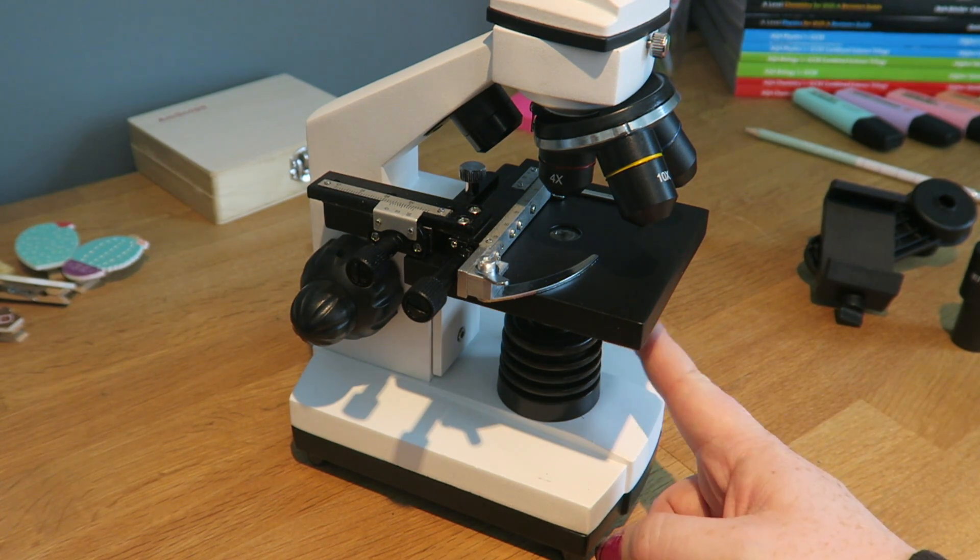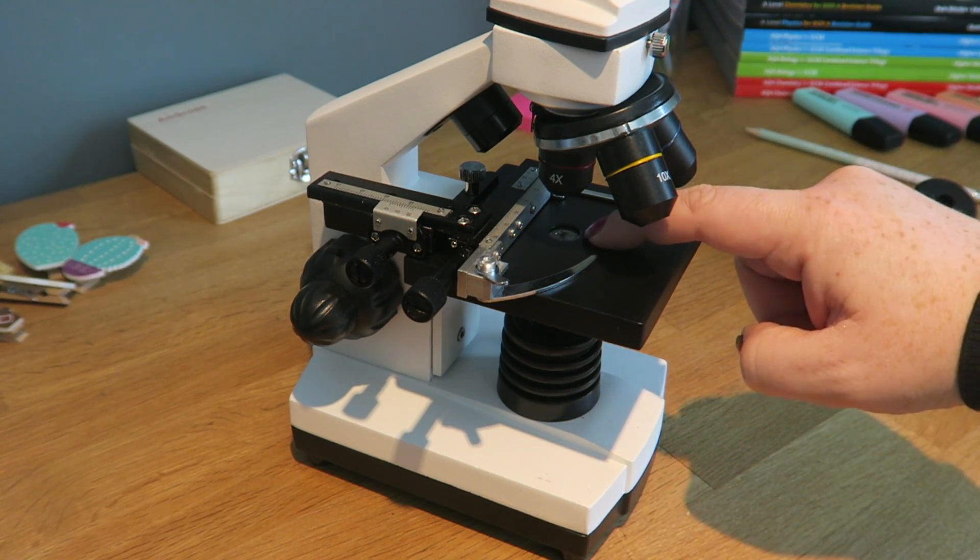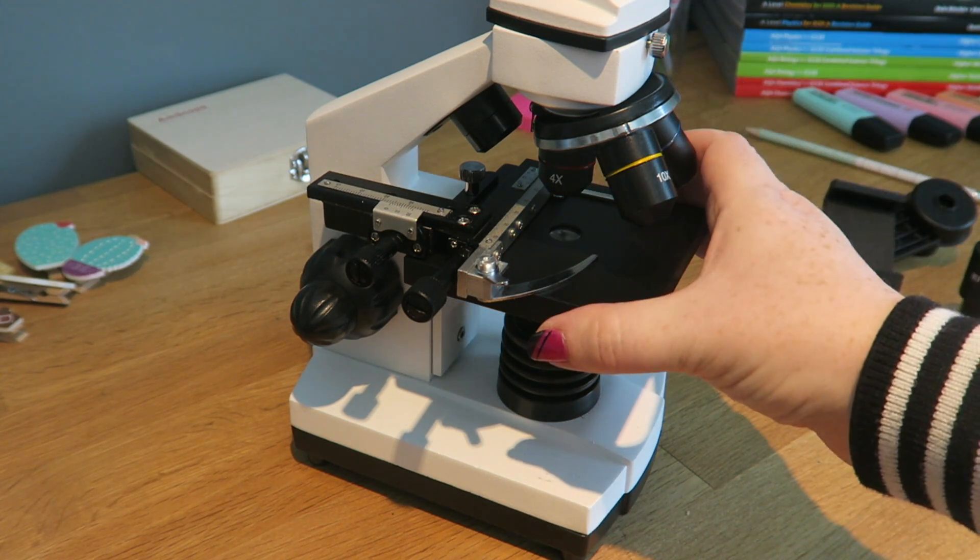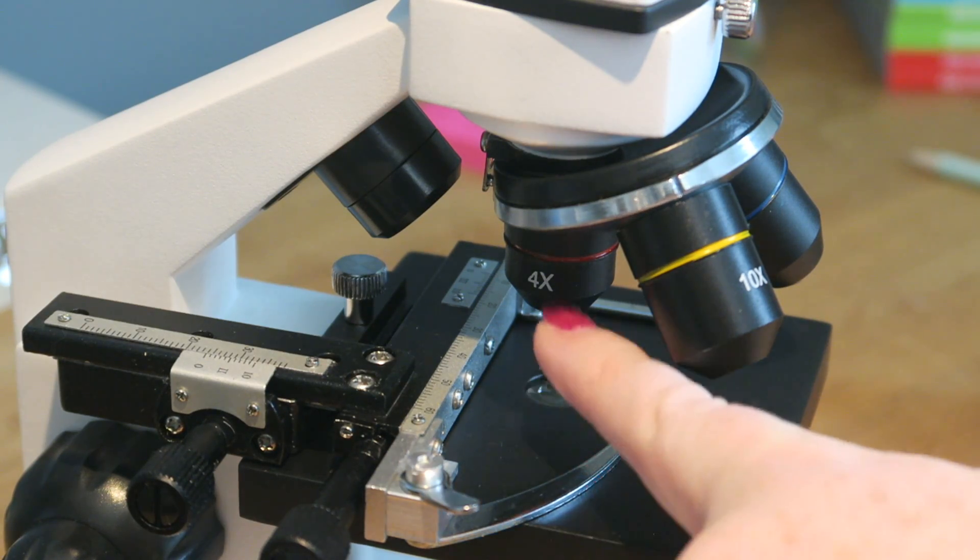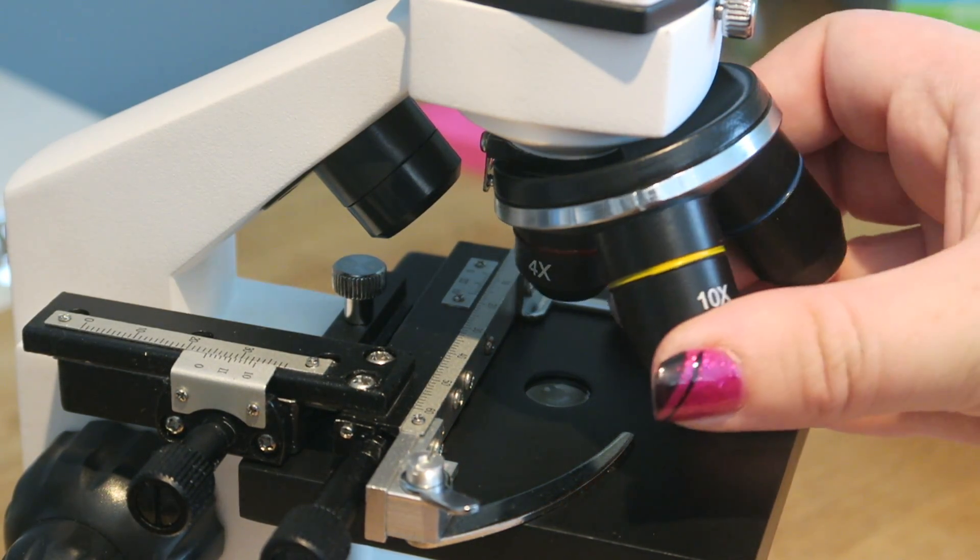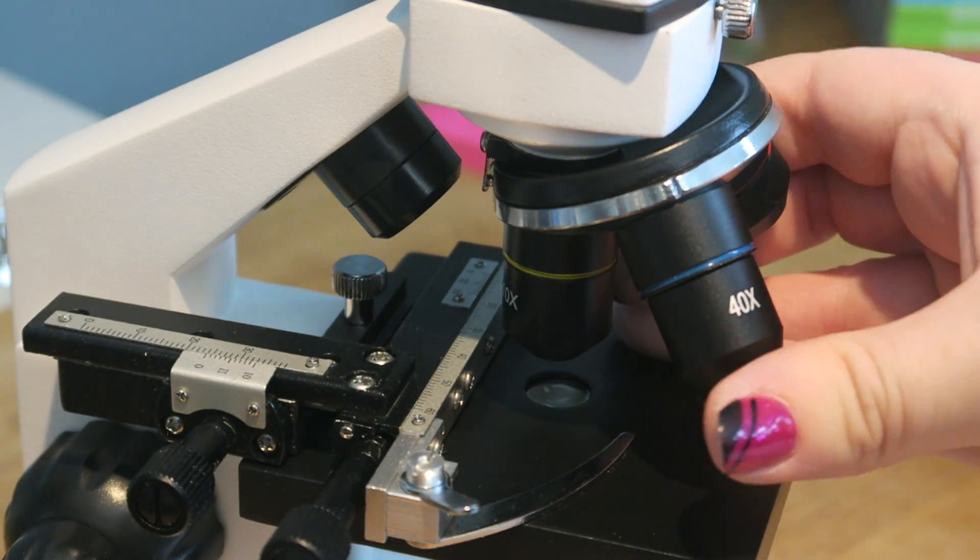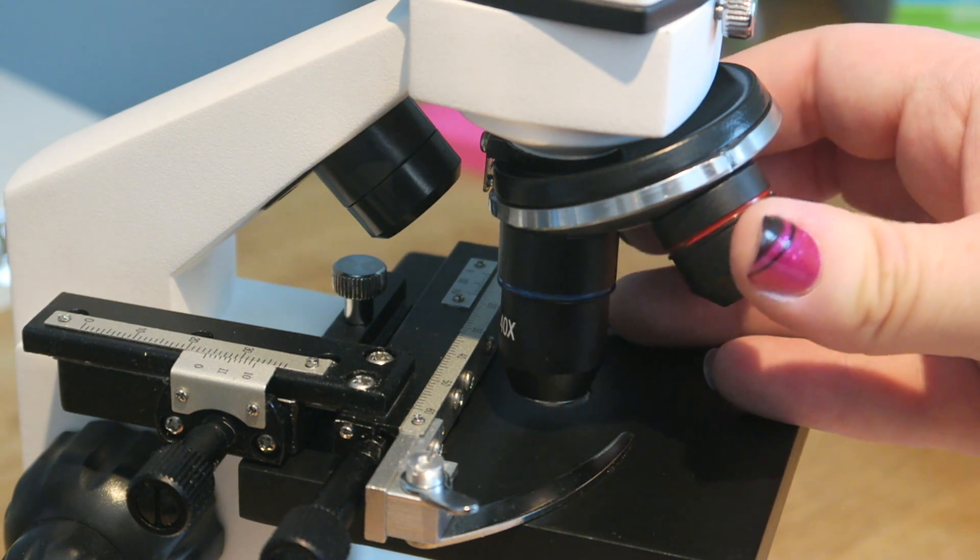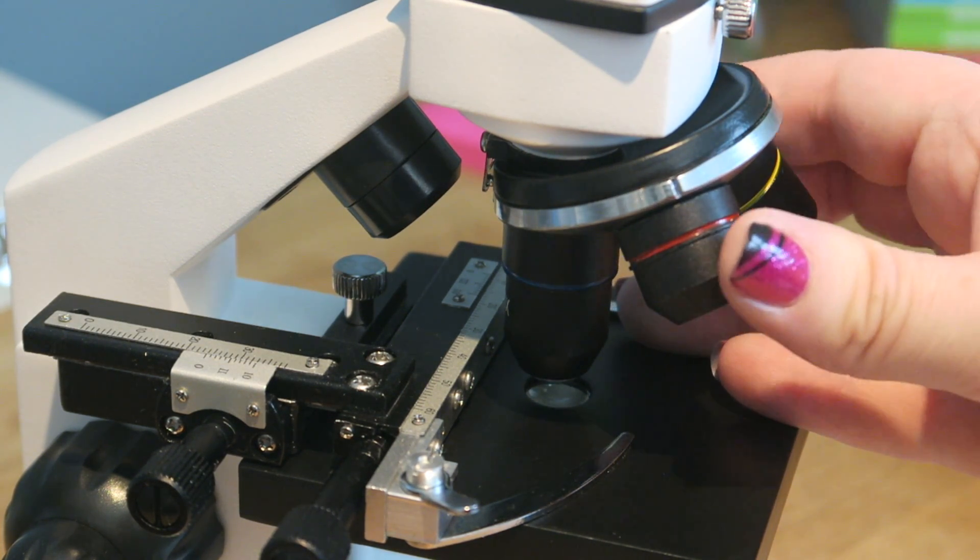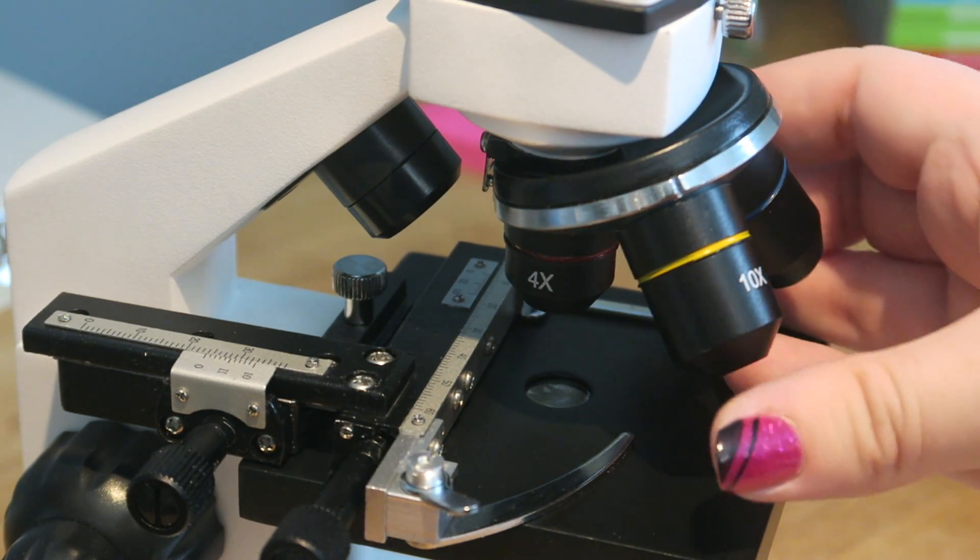When the light passes up from here, either the lamp or the mirror, it will go through the slide here, and it will go into the objective lenses. This microscope has four objective lenses on it, and they are a different magnification. We have a four times, we have a 10 times, and then we have a 40 times as well. And as you turn those around, you'll hear a little click as they go into place.